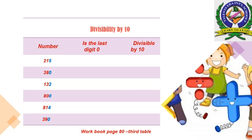The second number is 380. Is the last digit of 380 zero? Yes — that means we will put yes in the first column and yes in the second column also. The third number is 132. Does 132 end with 0? No — that means we will put no in the first column and no in the second column.